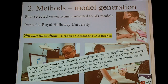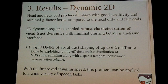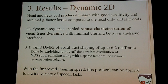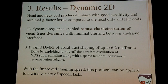The CAD files will be freely shared under the Creative Commons license on the NATS website. Creative Commons means you can use them — credit us, we won't sue you. Results: the head and neck coil produced the most beautiful images with good sensitivity and minimal G-factor losses compared to the other coils. The 2D dynamic sequences captured robust characterizations of vocal tract dynamics with minimal blurring of air-tissue interfaces, and this protocol can be used for other speech tasks with improved imaging speed.